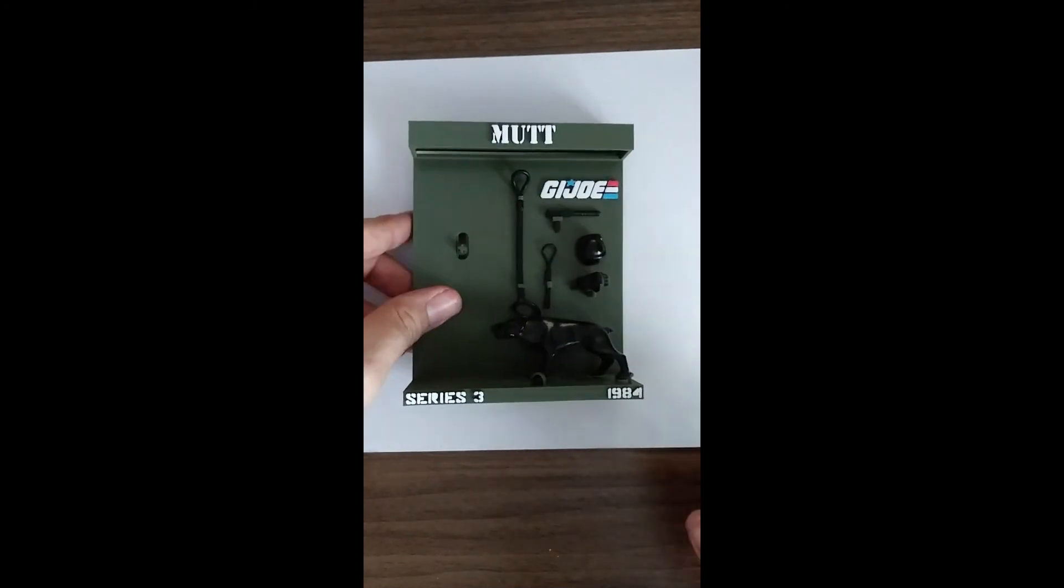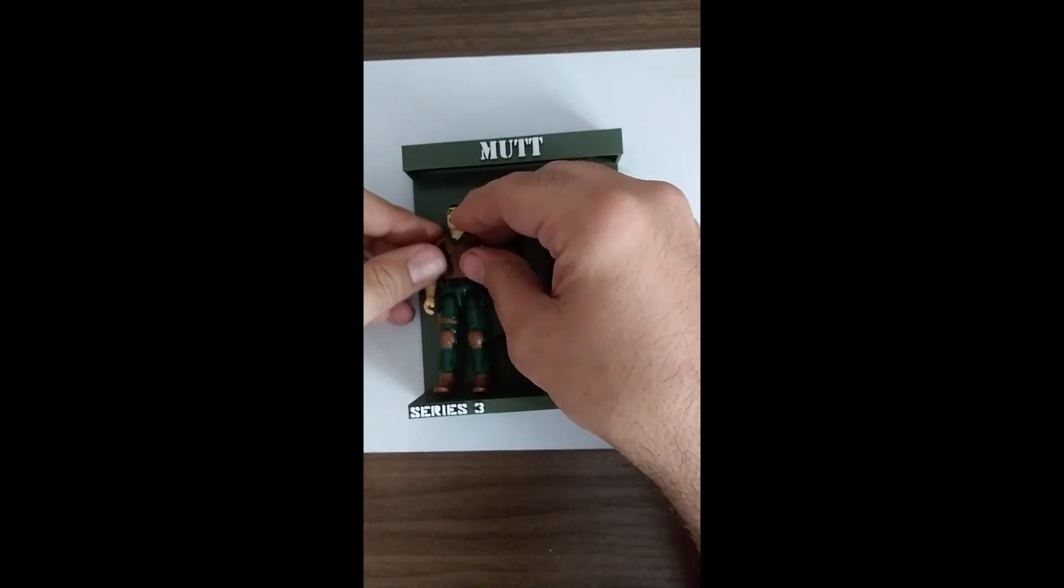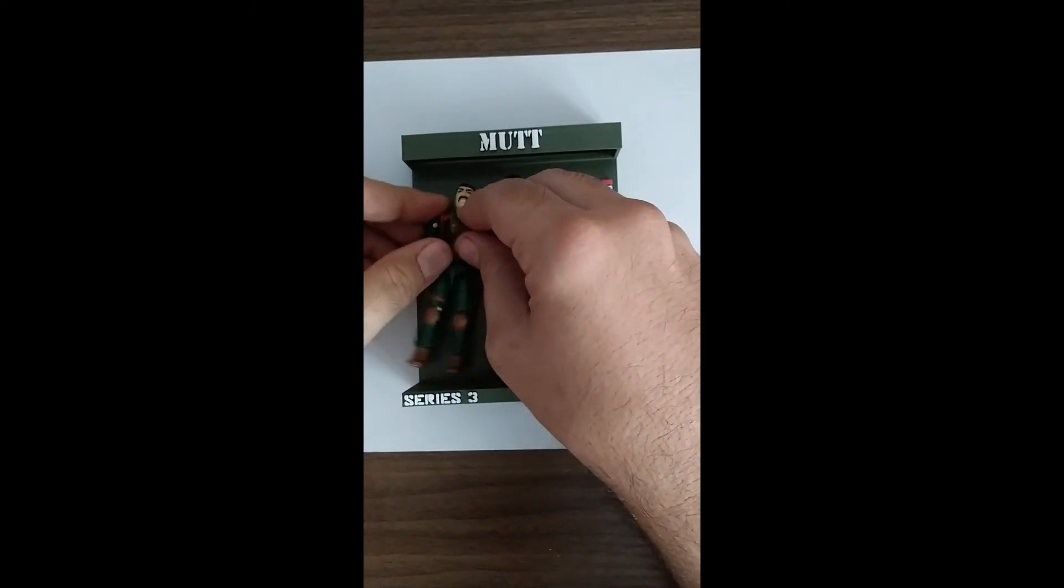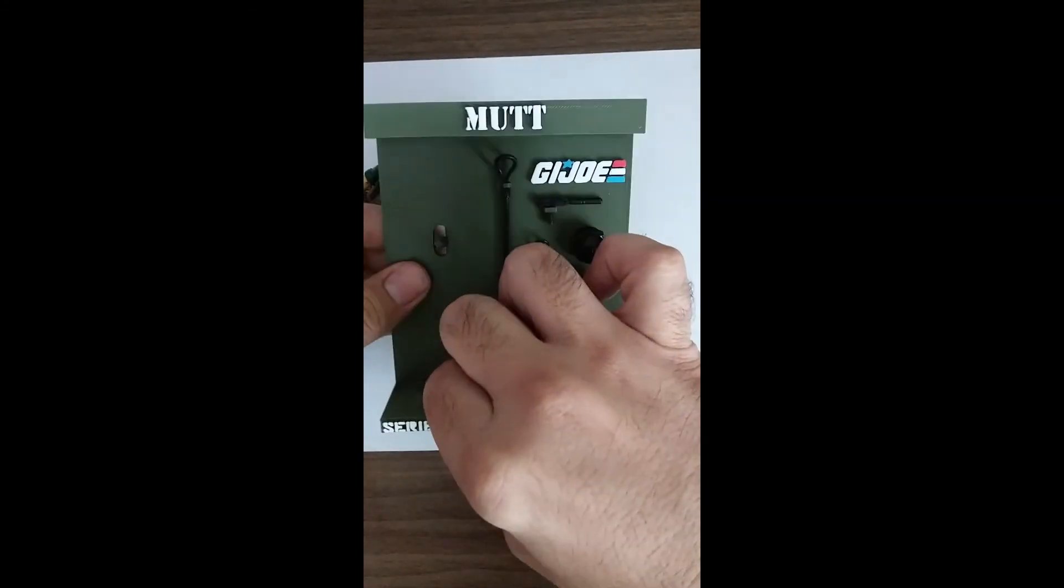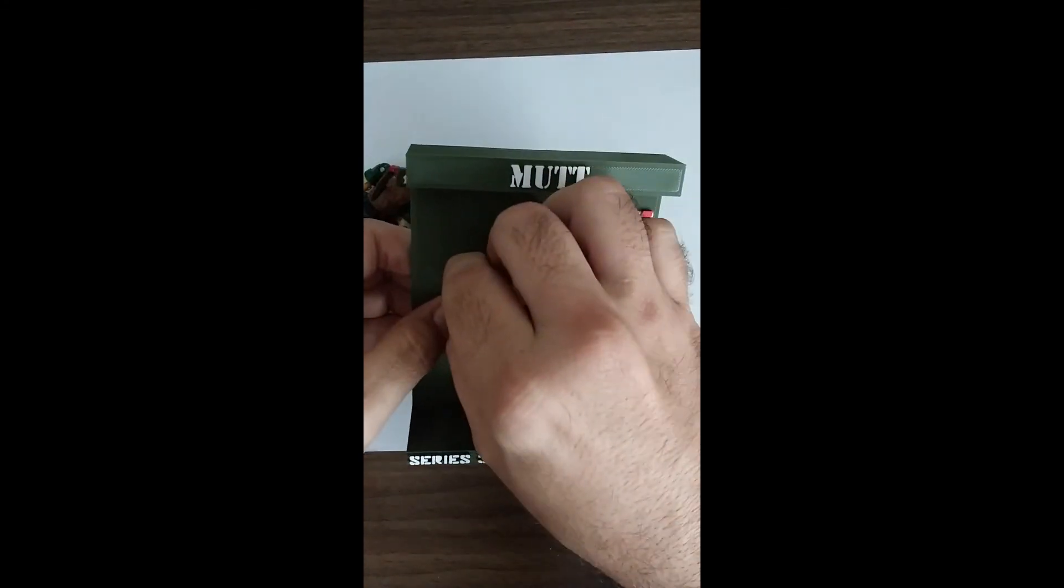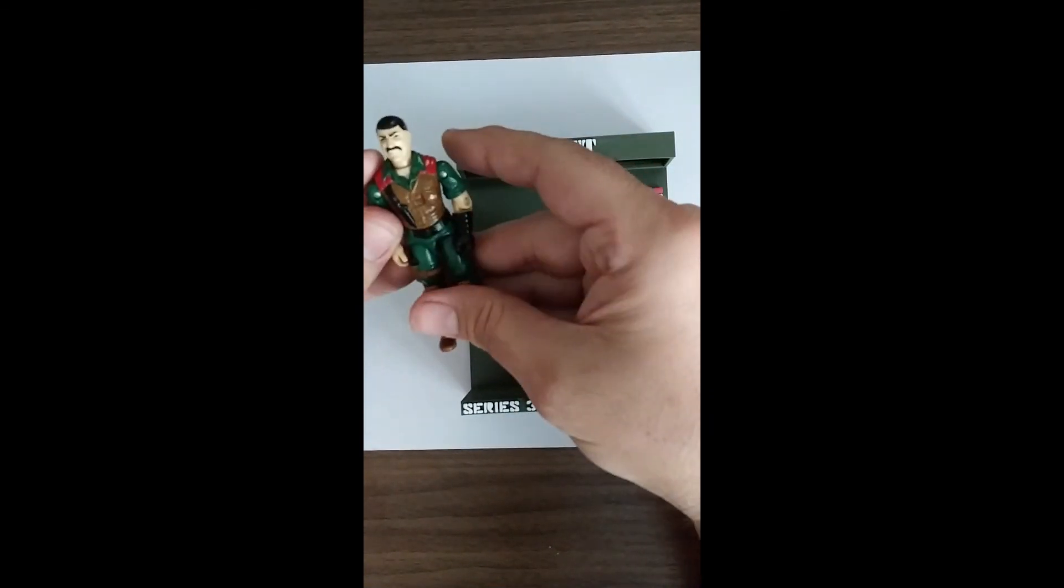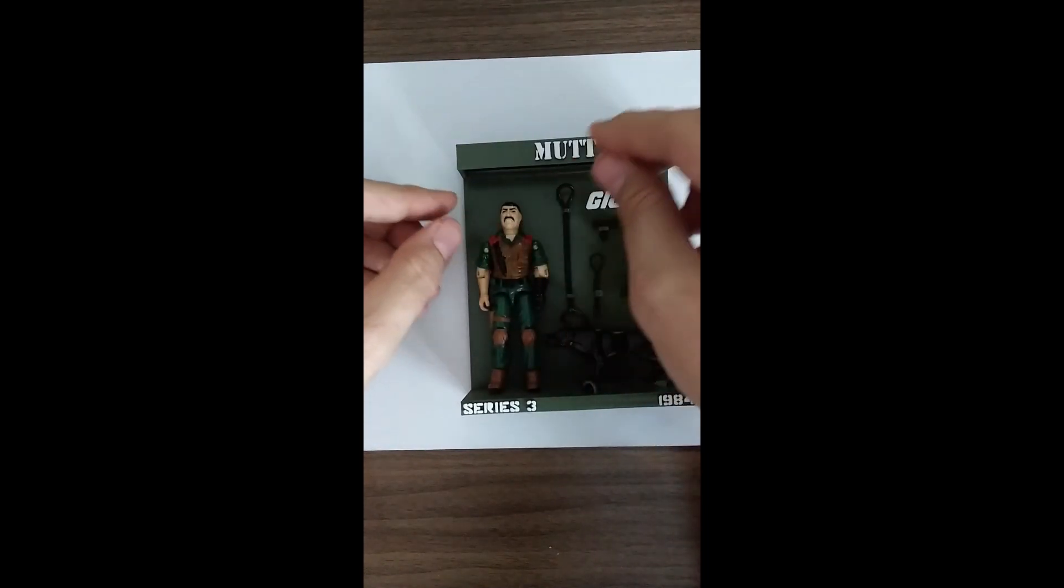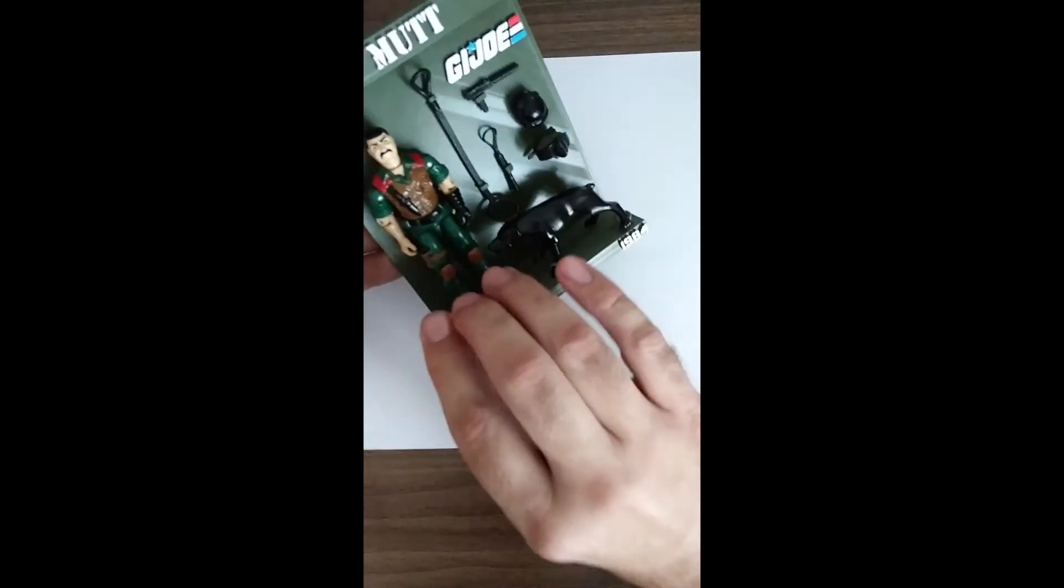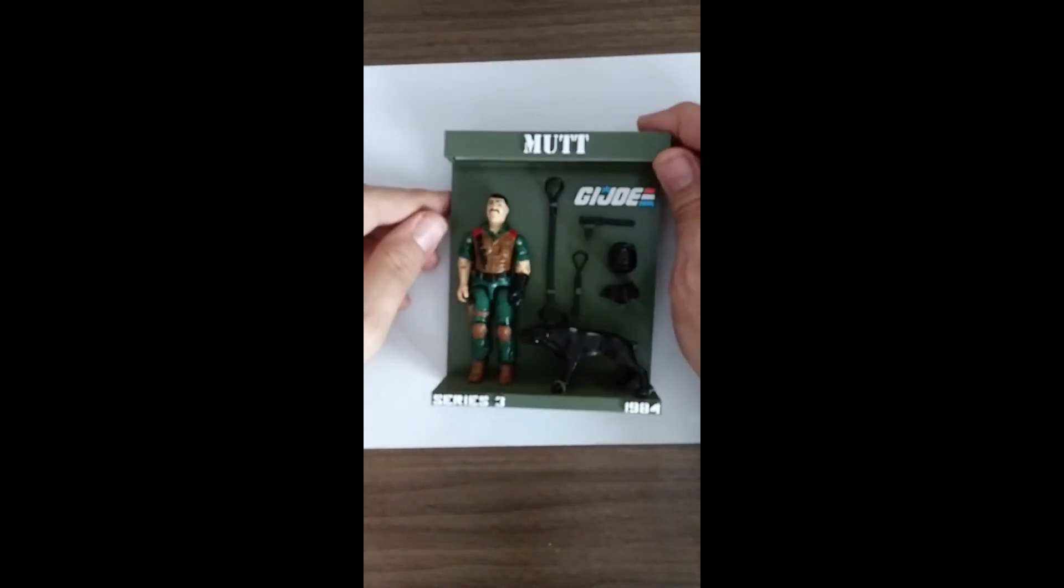And then just put Mutt in. Peg's a little low. Normally I recommend actually adjusting it from the back because if you adjust it like I just did from the front it can break the peg. There we go. That's all there is to Mutt.